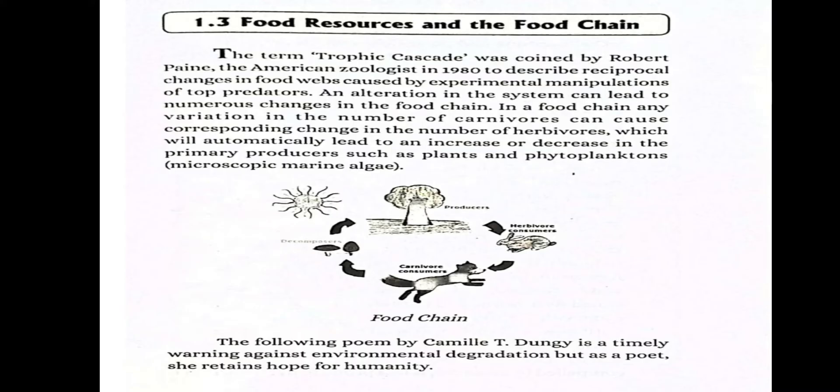In a food chain, any variation in the number of carnivores can cause a corresponding change in the number of herbivores, which will automatically lead to an increase or decrease in the primary producers such as plants and phytoplanktons, which are microscopic marine algae.